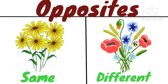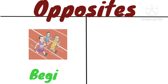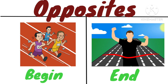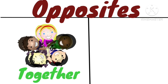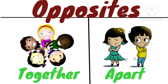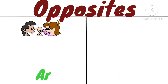Opposite of same is different. All the flowers are same in color, and all the flowers are different in color. Opposite of begin is end — beginning of the race, and end of the race.